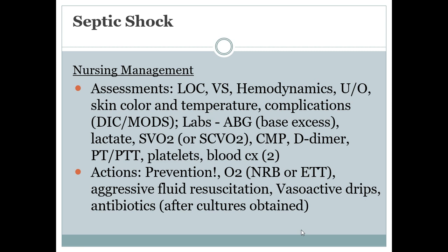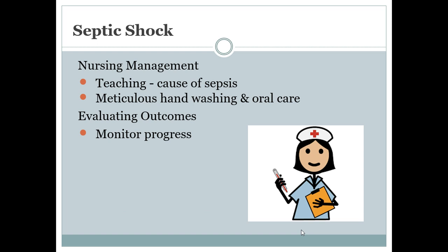The main thing we can do is prevention and monitor for any progression. Provide good oxygenation — non-rebreather or mechanical ventilation. Do aggressive fluid resuscitation, vasoactive drips if needed, and antibiotics after blood cultures are obtained. For teaching, instruct the patient and family on the causes of sepsis, allow visitation as tolerated, and do meticulous hand washing and oral care. Evaluate outcomes by assessing blood pressure, cardiac output, and adequate tissue perfusion.